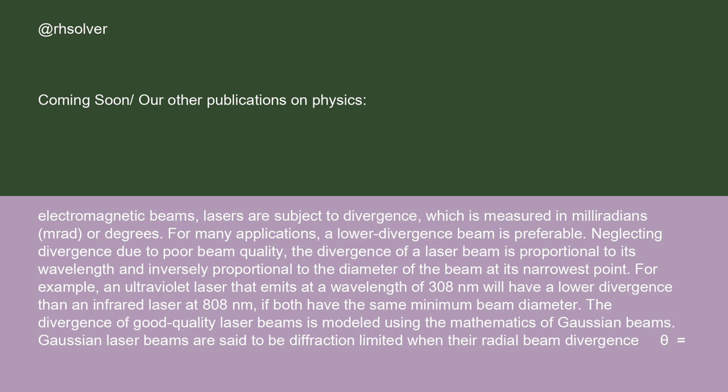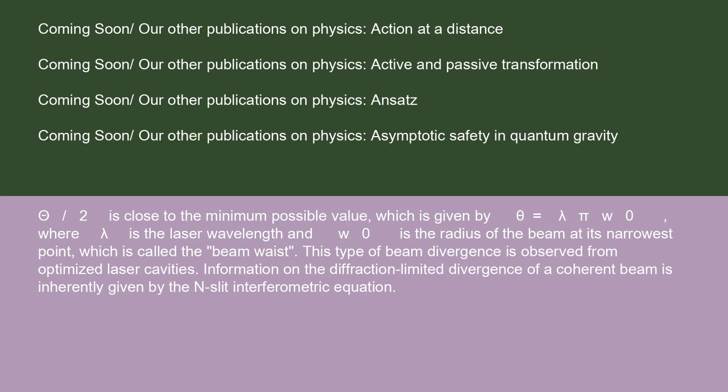Gaussian laser beams are said to be diffraction limited when their radial beam divergence theta/2 is close to the minimum possible value, which is given by theta = lambda / (pi * w0), where lambda is the laser wavelength and w0 is the radius of the beam at its narrowest point, called the beam waist. This type of beam divergence is observed from optimized laser cavities. Information on the diffraction-limited divergence of a coherent beam is inherently given by the single-slit interferometric equation.